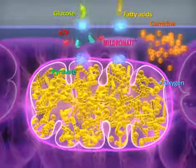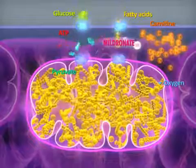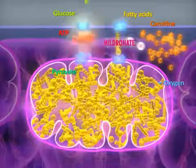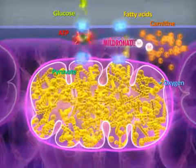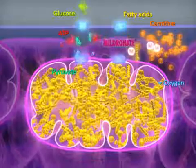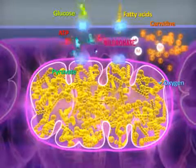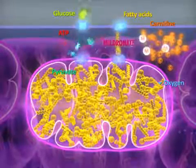One pharmacological solution to improve energy metabolism is to use an original Grindex product, Mildronate, a PFOX inhibitor which partially inhibits the oxidation of fatty acids.